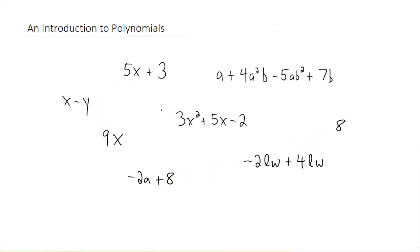There are a couple of polynomials written down here that only have one term. The number 8 is considered to be a polynomial, and so is just the term 9x. Since they're by themselves, we call these monomials. Mono meaning 1.